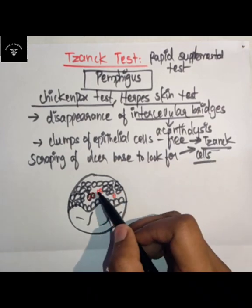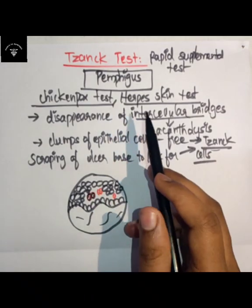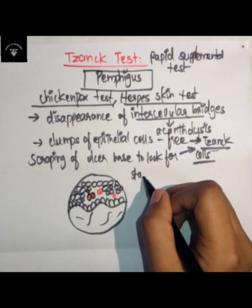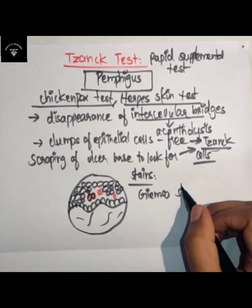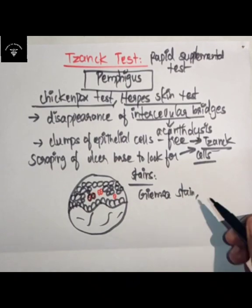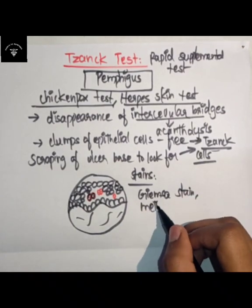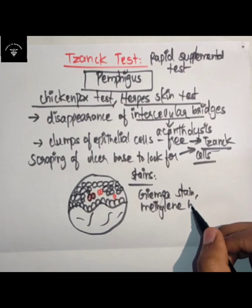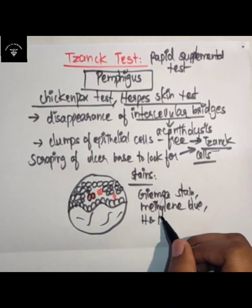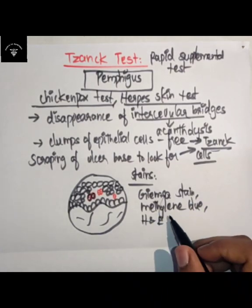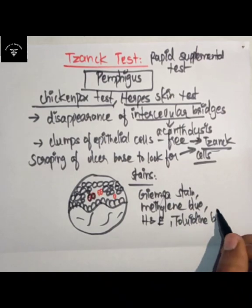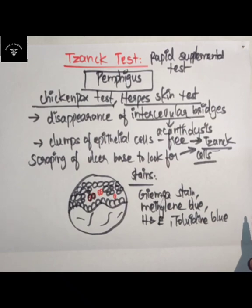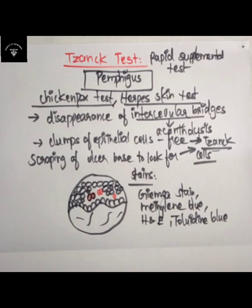The stains used for the Tzanck test are: Giemsa stain, methylene blue stain, H&E stain (hematoxylin and eosin stain), and toluidine blue stain. These are the stains used for the Tzanck test — the key points to remember for your exam.